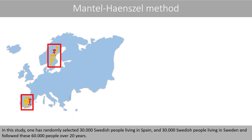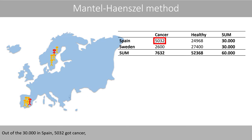In this study, one has randomly selected 30,000 Swedish people living in Spain and 30,000 Swedish people living in Sweden, and followed these 60,000 people over 20 years. Out of the 30,000 in Spain, 5,032 got cancer, whereas only 2,600 individuals out of the 30,000 in Sweden got cancer.